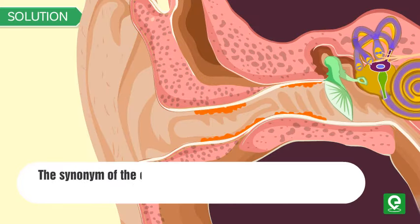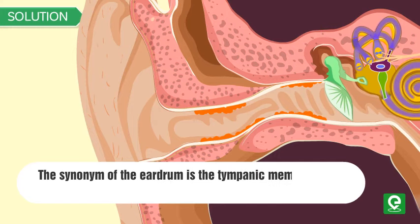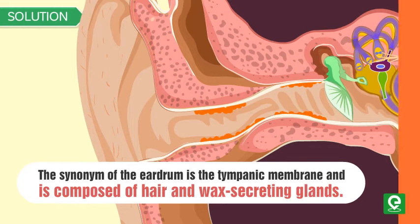Solution: The synonym of the eardrum is the tympanic membrane and is composed of hair and wax-secreting glands. Hence, option three is the correct answer.